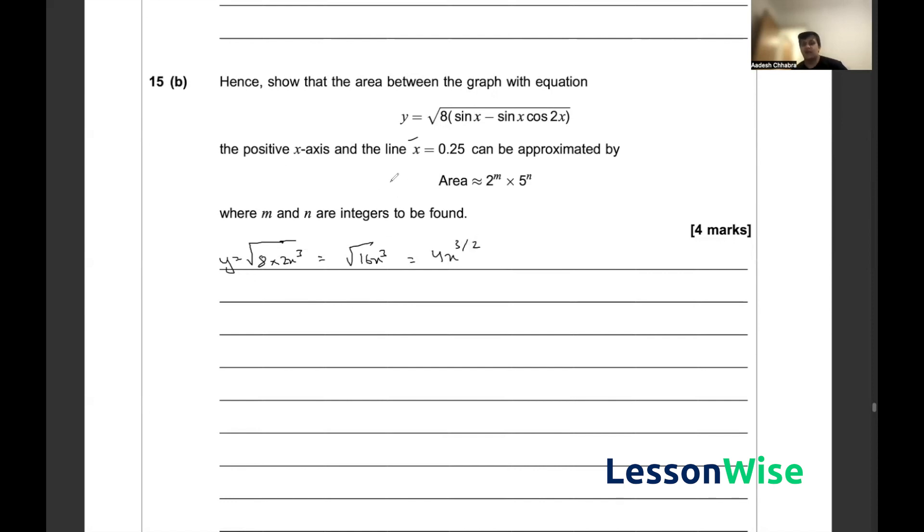If we were to find the area under the curve for this equation, we'd find the area under the curve between 0.25 and 0 of 4x to the 3 by 2 dx, bringing 4 as a constant outside.